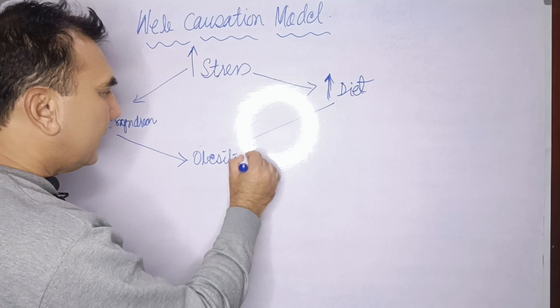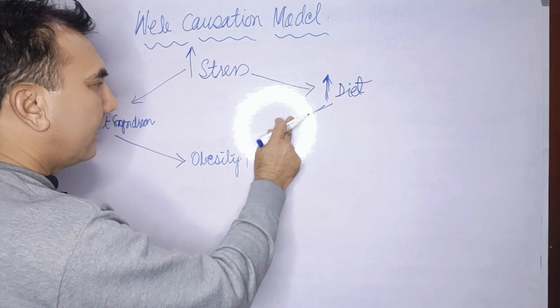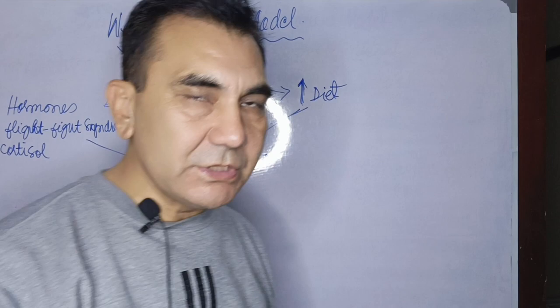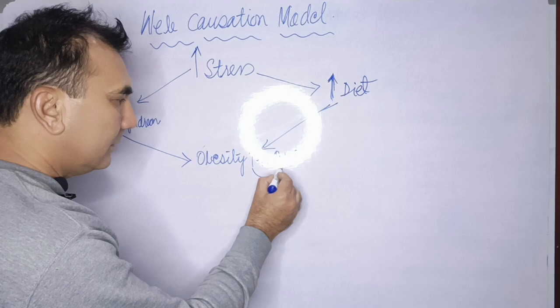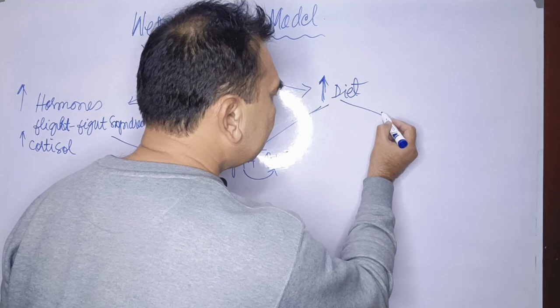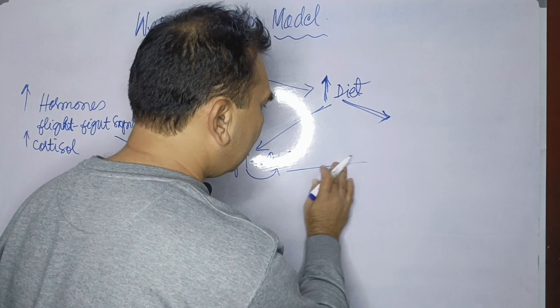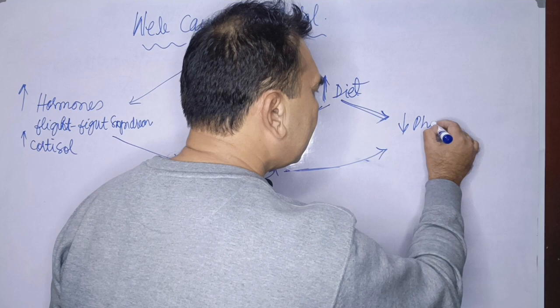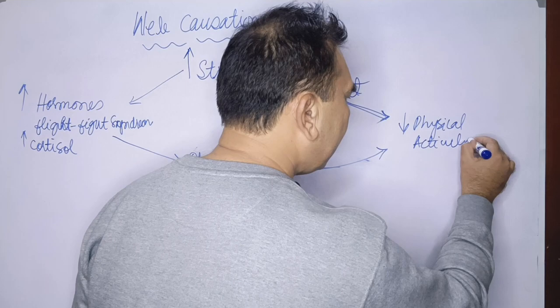Obesity increases inside the host. Additionally, the lipid profile increases as obesity rises. When diet intake increases, obesity increases further, and increased diet intake combined with obesity leads to a decrease in the physical activity of the host.